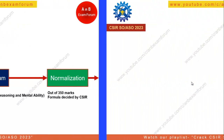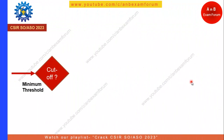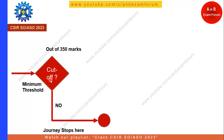Once normalization is over, they will look for the minimum threshold, which is also known as the cutoff. One important thing to note: it is an overall cutoff, not a sectional cutoff. The cutoff is not given in the advertisement, but it will definitely be out of 350 marks and will be decided by CSIR. If you are not able to get that minimum threshold, your journey stops there and you need to restart.